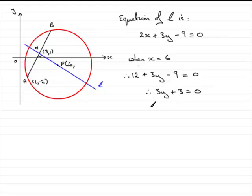Subtract 3 from both sides, you've got 3y equals minus 3, and divide both sides by 3, and you end up with y equals minus 1.